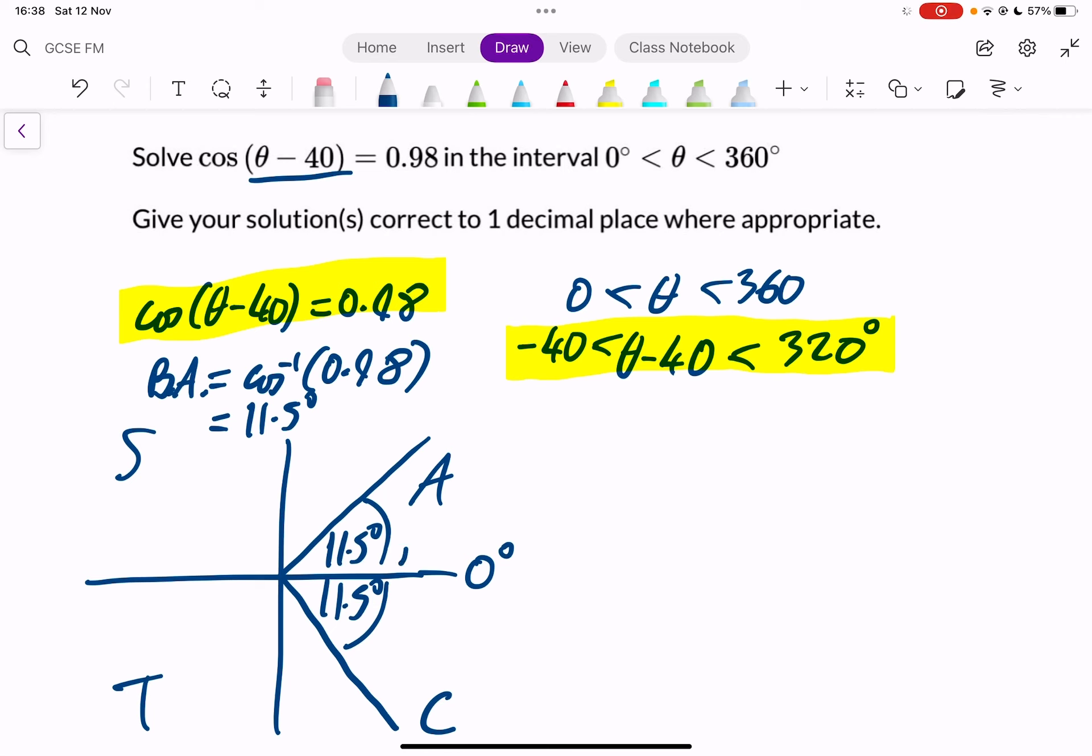So here, the first one, that will be theta minus 40 going around the positive way is equal to positive 11.5 degrees. Or theta minus 40 is equal to minus 11.5 degrees.